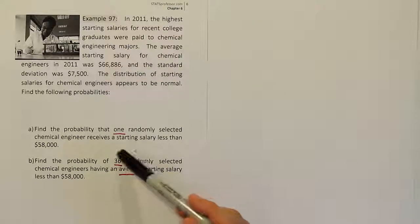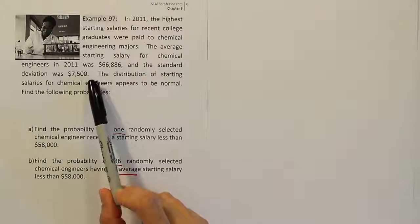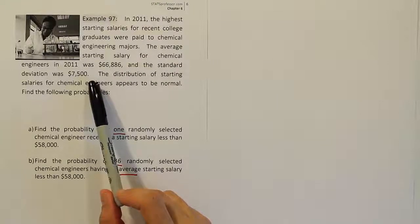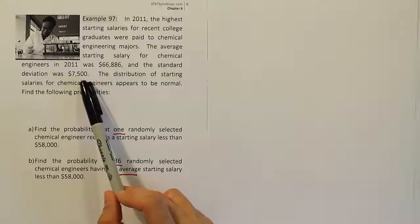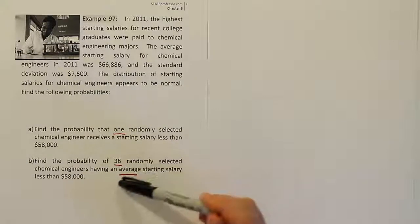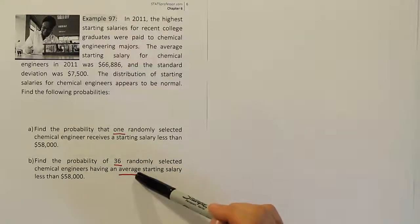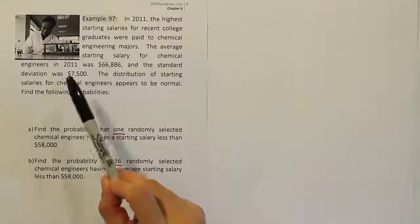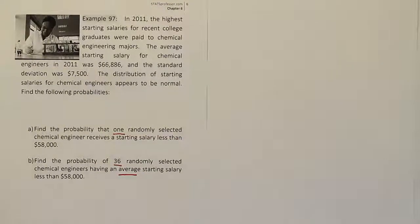By applying the central limit theorem, it means that we're going to take this number 36 and we're going to use it to adjust our standard deviation. So this standard deviation of $7,500, that's the standard deviation for an individual x-value. An individual chemical engineer being selected, and if you look at his salary, the standard deviation is $7,500. In this case, though, we're talking about the average of a group of chemical engineers. So in that case, the average is obviously going to have a different standard error. We're going to have to adjust it by dividing it by this sample size. So that's the key difference in the two parts of the problem.